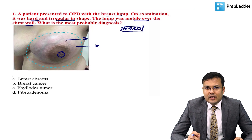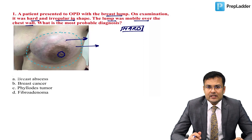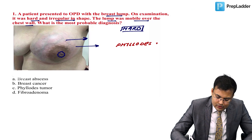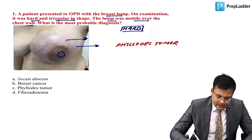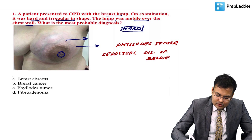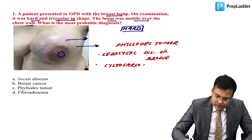These findings are seen in Phyllodes tumor. The other name of Phyllodes tumor is cystosarcoma Phyllodes, also known as serocystic disease of Brodie. It is also known as cystosarcoma Phyllodes.